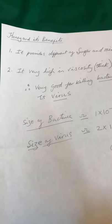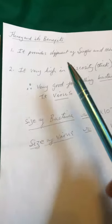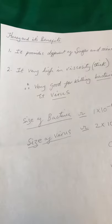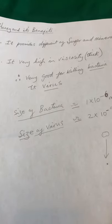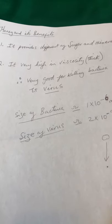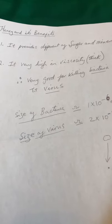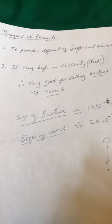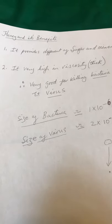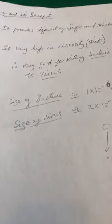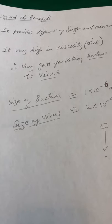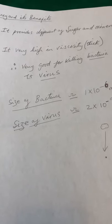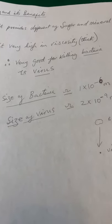Honey is very thick — its viscosity is very high and it is very powerful. One of the great things about that thick viscosity is that it can kill germs, bacteria, and viruses easily. Any germ, any bacteria, any virus — to compare, let me give you an idea of the sizes involved.